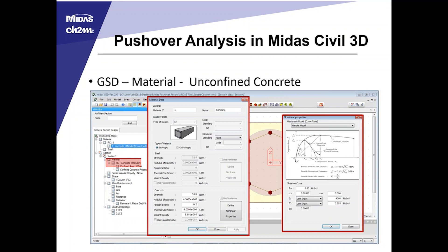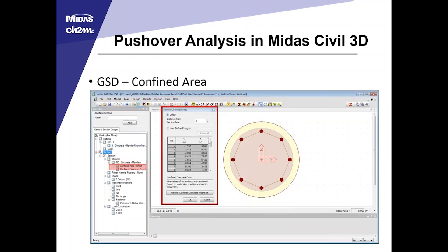Also at the bottom right of the material data window is the nonlinear property window. One thing to note: although we're defining the unconfined concrete, the model chosen for the nonlinear property of the unconfined concrete will be the default model used for the nonlinear properties of the confined concrete. So it's important to choose a consistent model between the two. In this case, I've chosen Mander's model. The next step is to define the confined area, which is the confined core by the stirrups.